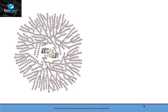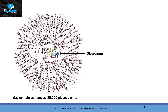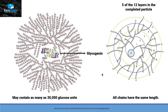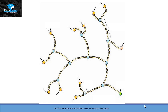Glycogen is a very organized polymer and it has a protein in the center called glycogenin. This polymer of glycogen contains almost 30,000 glucose units. They are not present randomly; they are present in a highly organized manner. As you can see in this picture, we have five layers shown — in total there are 12 layers — where you can see a sequence of glucose attached to each other, branching off at several different points, and all the chains have the same length.